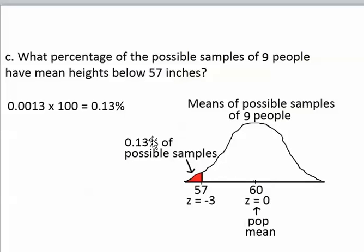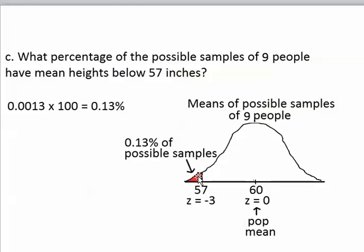So what we've just found out is that when we randomly select that sample of nine people from the population, 0.13% of the possible samples would give us a sample mean way down here below 57. And since 0.13% of the possible samples are in this area, we have a 0.0013 probability of getting a sample mean in this area down here below 57.